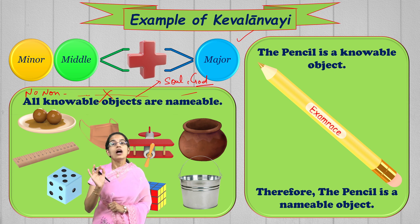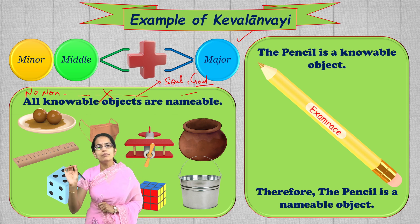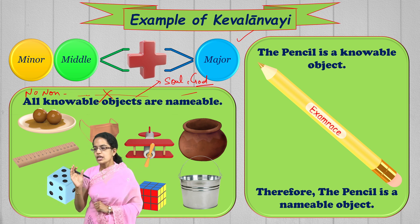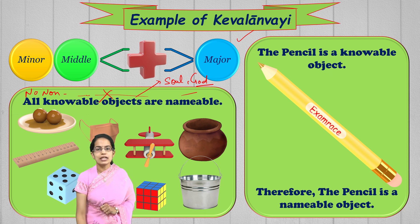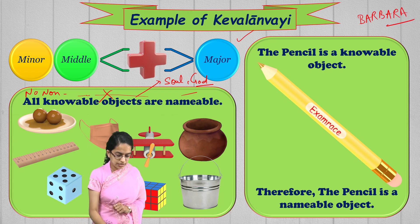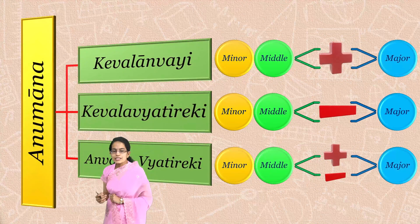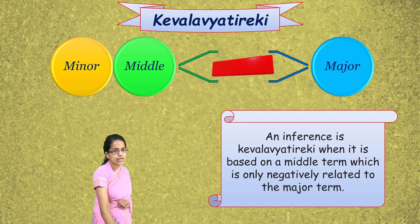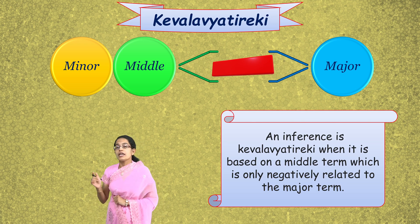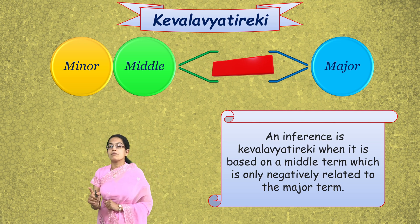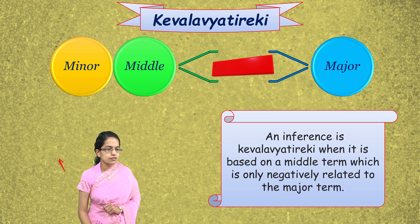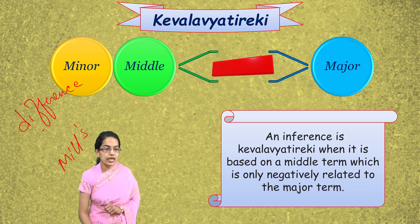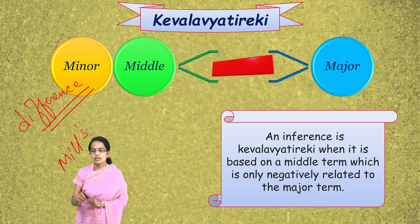Kevalya Anvaya, as a positive relation, is equivalent to Mill's method of agreement and is equated to Barbara in syllogism or Western logic. The next type, Kevalya Vyatireki, is a negative relation between the middle term and the major term, based on Mill's method of difference — where previously we had agreement of presence, here we have agreement of absence.